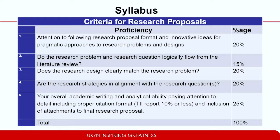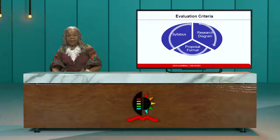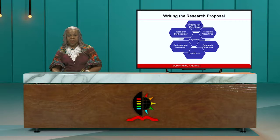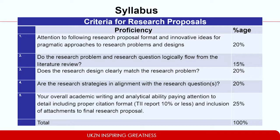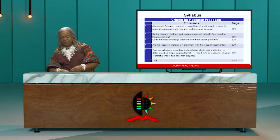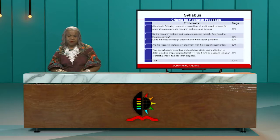Criterion two: do the research problem and research question — or research objectives or hypothesis — logically flow from the literature review? This is the alignment I keep talking about. Can I look at your literature review and see what scholars you used to write up your research problem? Your research problem must have scholarly treatment — you can't write it off the top of your head. It has to be based on literature, which means you have to do the literature review and work all that out before you can even come up with a research problem. That's 15%.